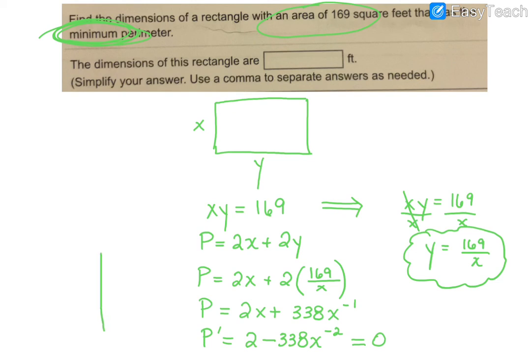And so if I go ahead and I've set it equal to 0 – and let me just come over here since I'm out of room there, I'm going to just kind of come over here to the side and continue over there. And so basically, what I have, if I move the 338, if I add it to both sides, I'm going to also write it as instead of X to the negative 2, I'm going to write it as X squared.